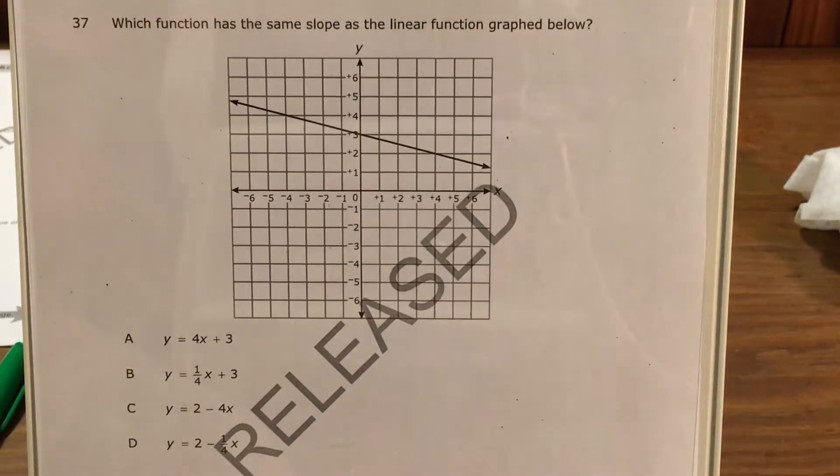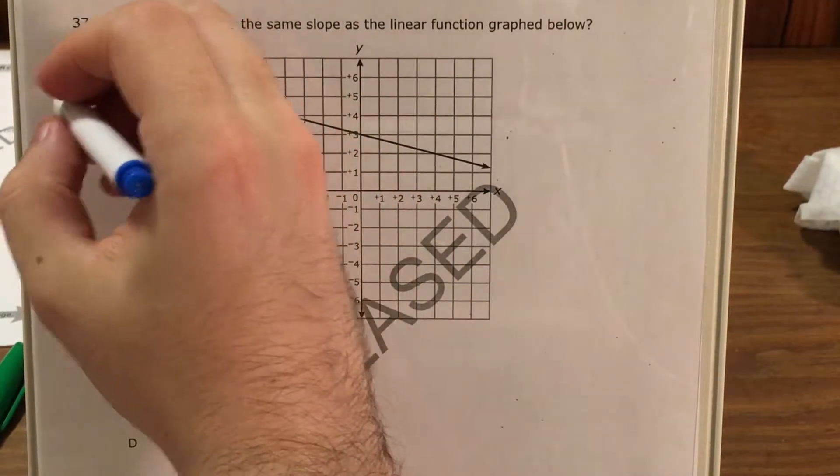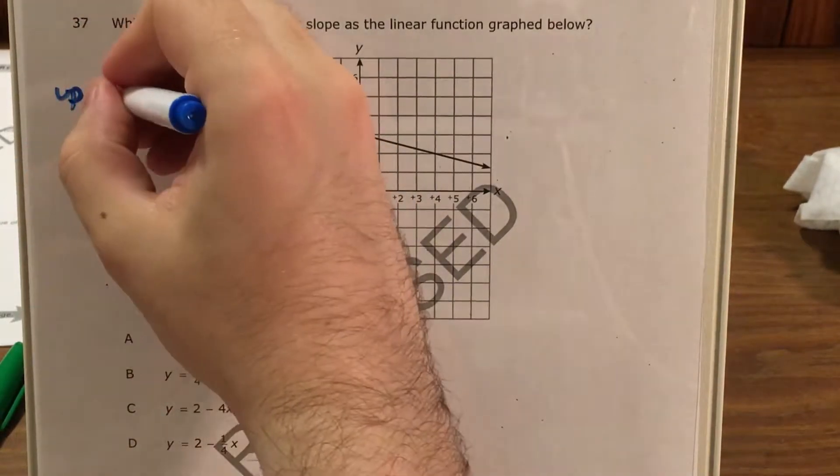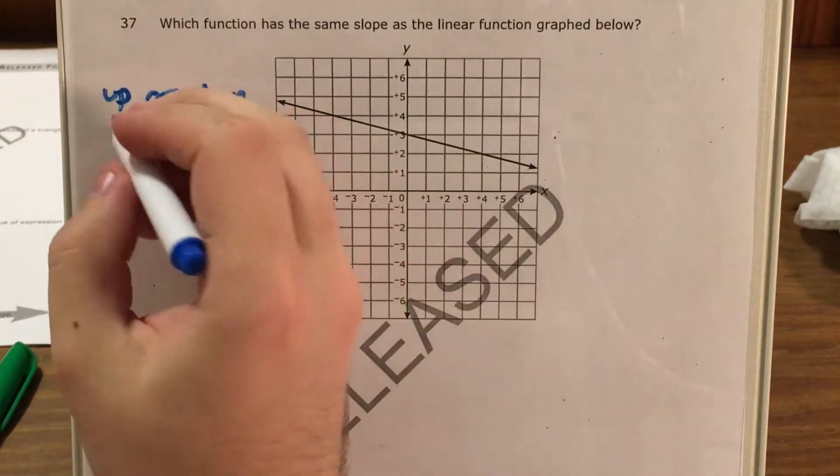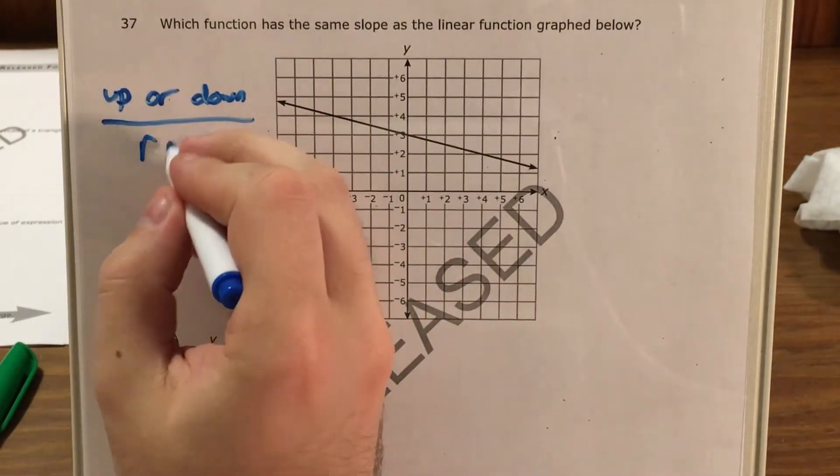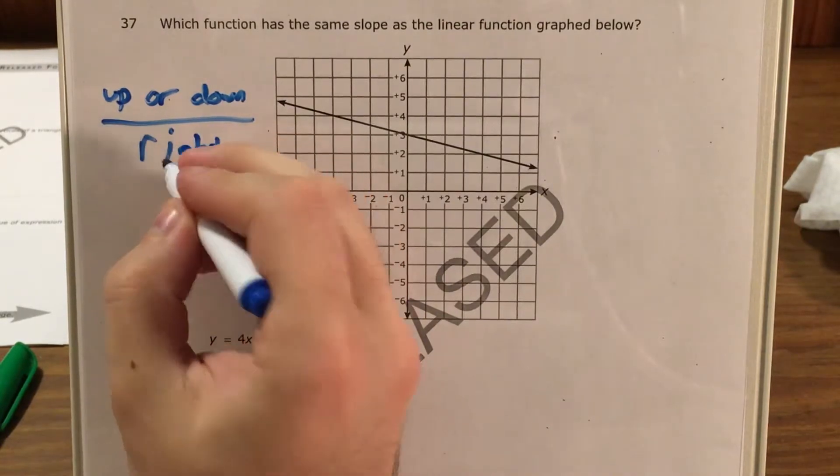So let's go ahead and do that, and I know there are several ways to think about slope, but on a graph I like to think of slope as how far up or down we're going as we're going right.